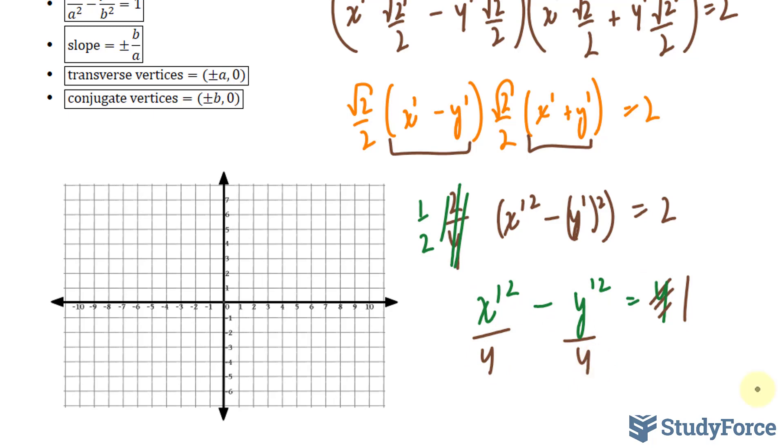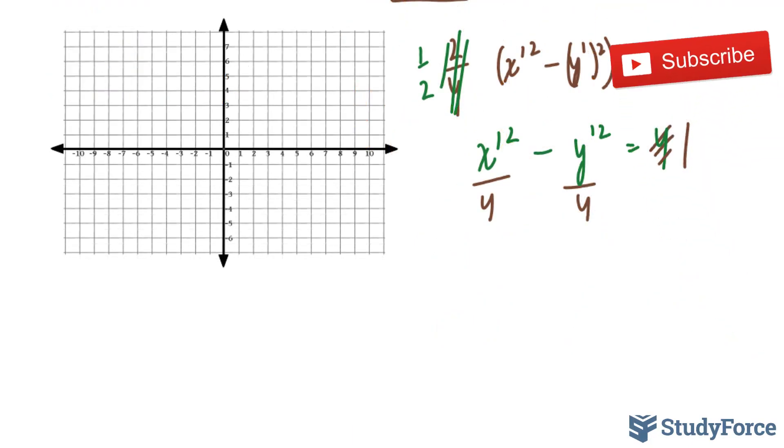Now as you can tell, this equation is a hyperbola. The reason I can tell is because you have two terms that are separated by a minus. And specifically, this type of hyperbola is one that opens horizontally.